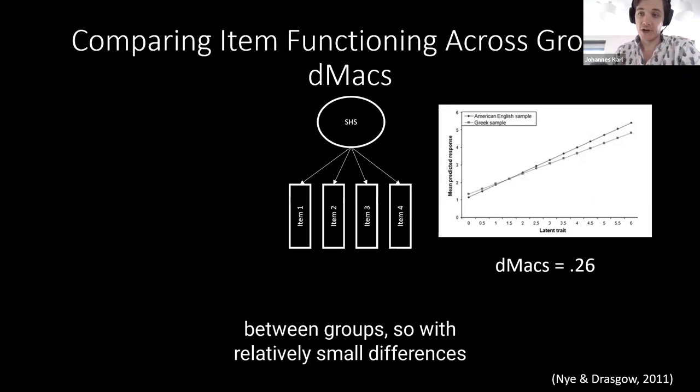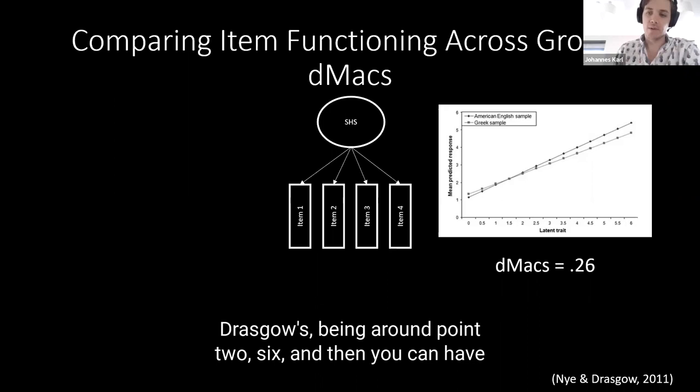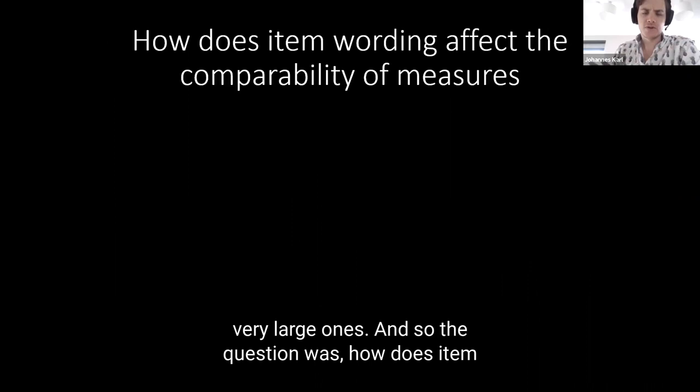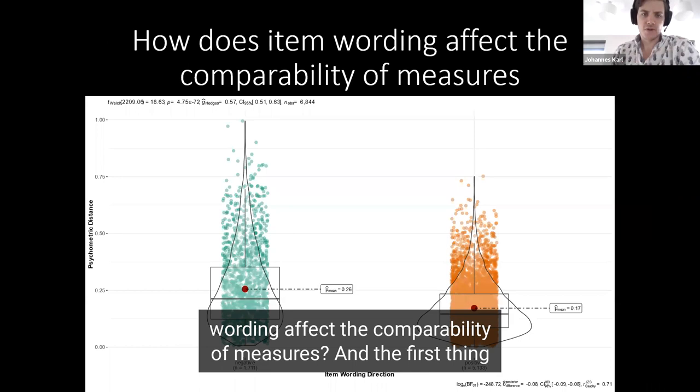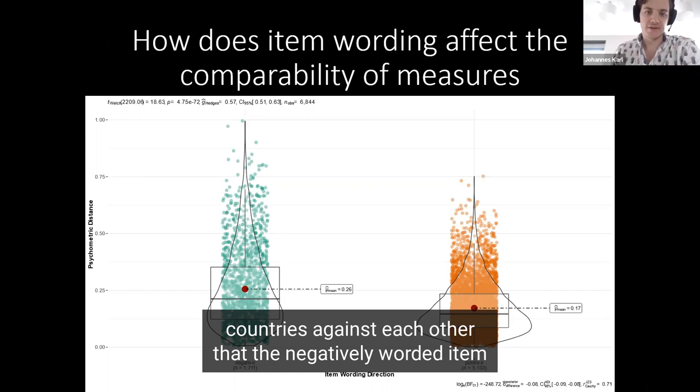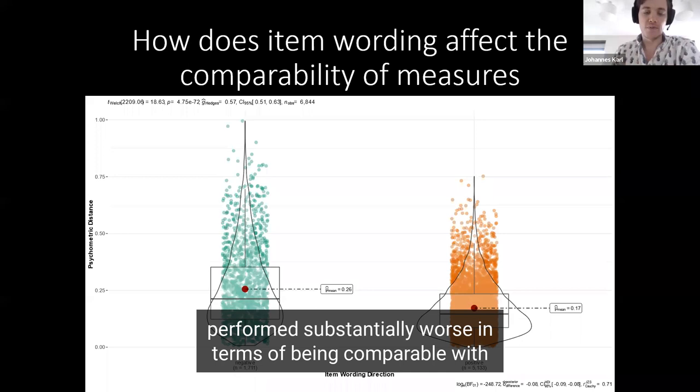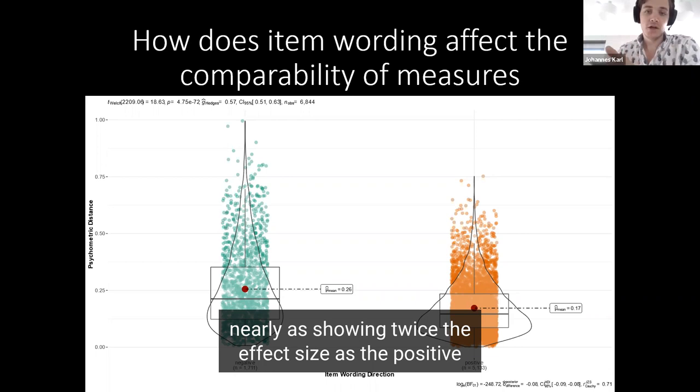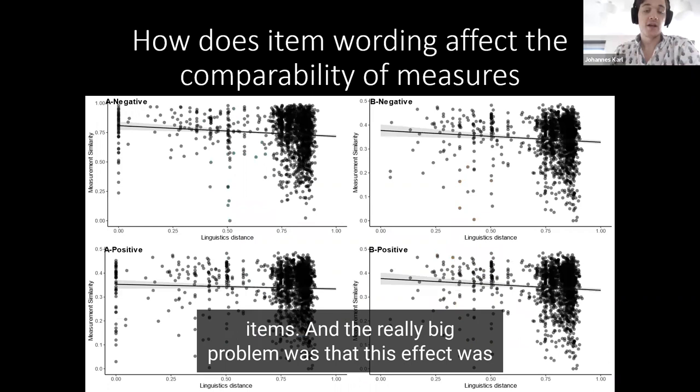With relatively small differences here between American and Greek, based on Nye and Drasgow's work, being around 0.26, you can have very large ones. So the question was how does item wording affect the comparability of measures? The first thing we found, comparing all of the different combinations of the 59 countries against each other, was that the negatively worded item performed substantially worse in terms of being comparable, nearly showing twice the effect size as the positive items.